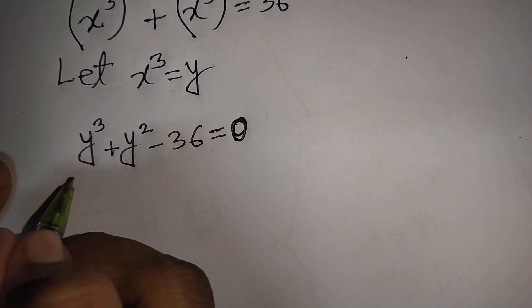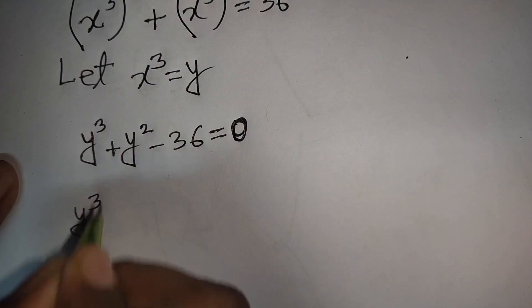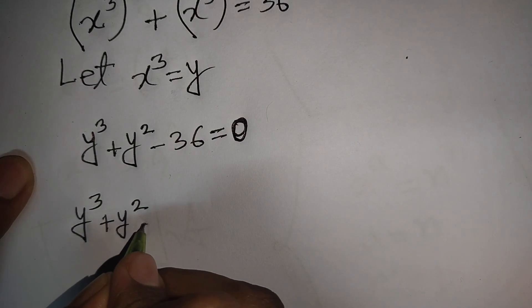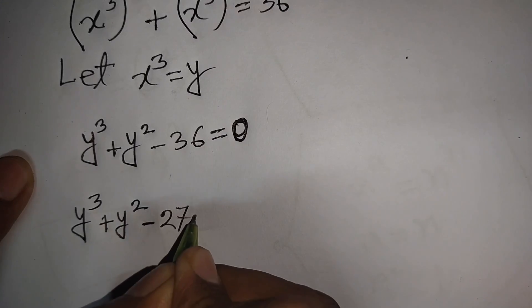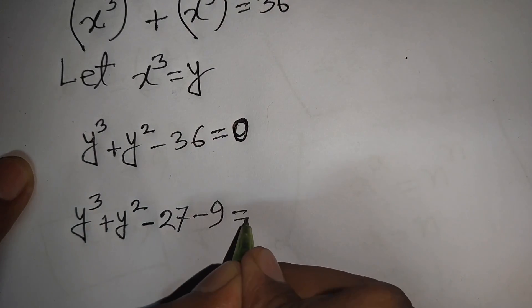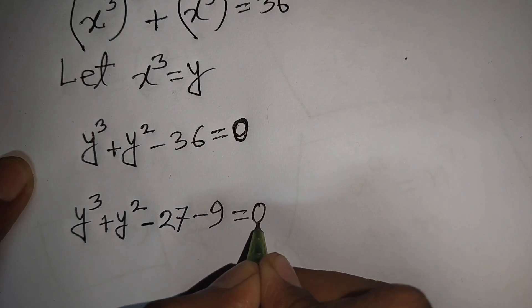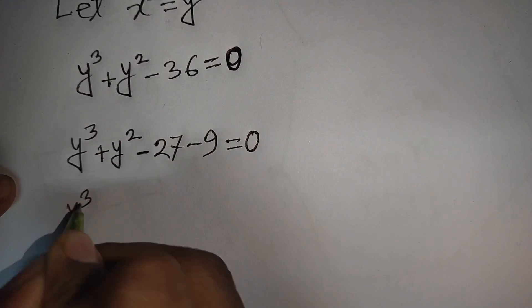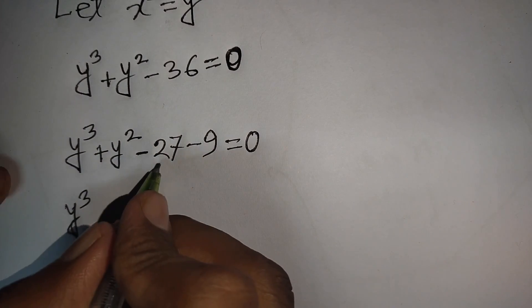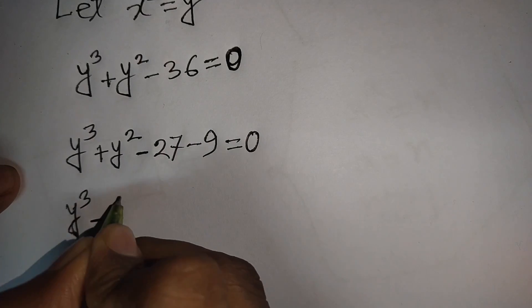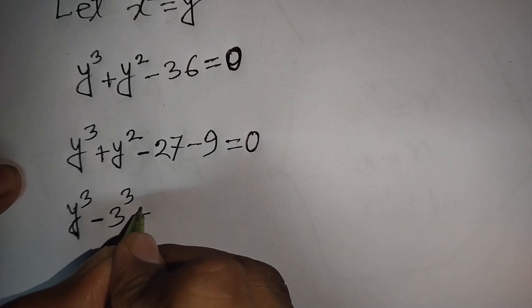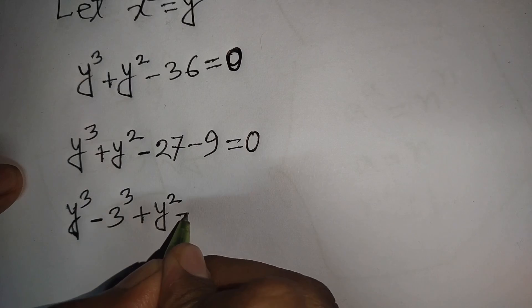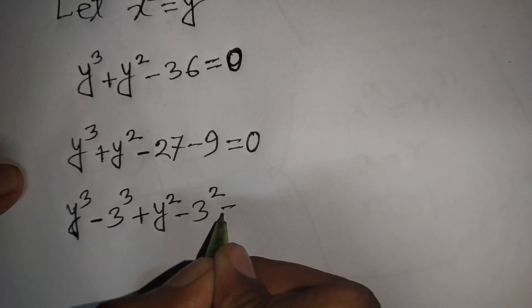Now y³ + y² - 36 can be rewritten by splitting -36 as -27 - 9. So we have y³ - 27 + y² - 9 = 0.